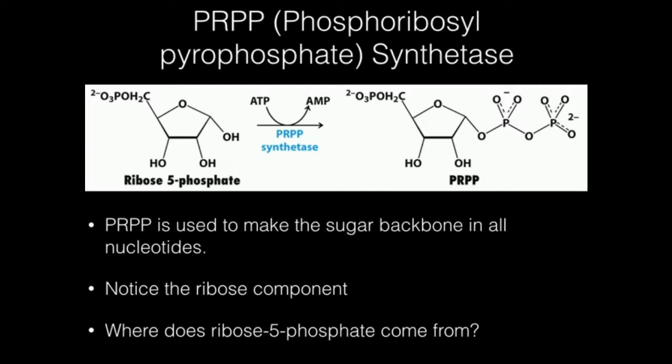There are a couple of things you should notice about this molecule. Number one, it's basically ribose 5-phosphate — here's the ribose ring right here. At the 5-position, we have a phosphate, because after all, it comes from ribose 5-phosphate. But instead of just having a simple hydroxyl group at the 1-prime position, it has a pyrophosphate group. Two condensed phosphate groups is a pyrophosphate, and so you call this phosphoribosyl pyrophosphate.